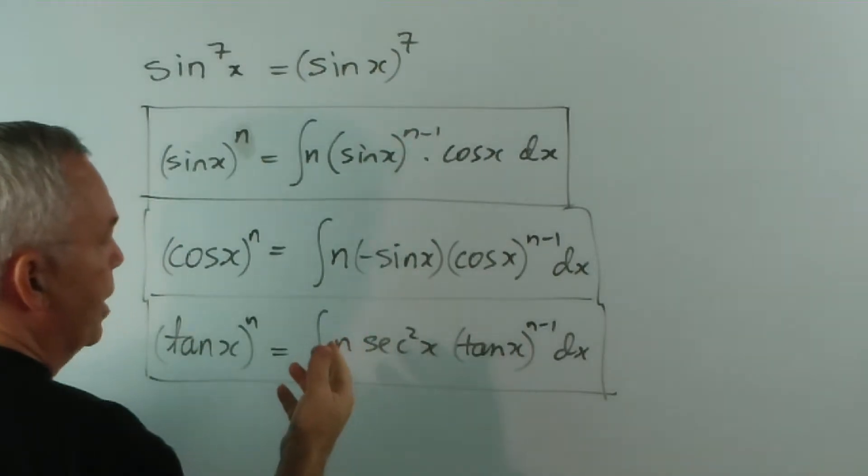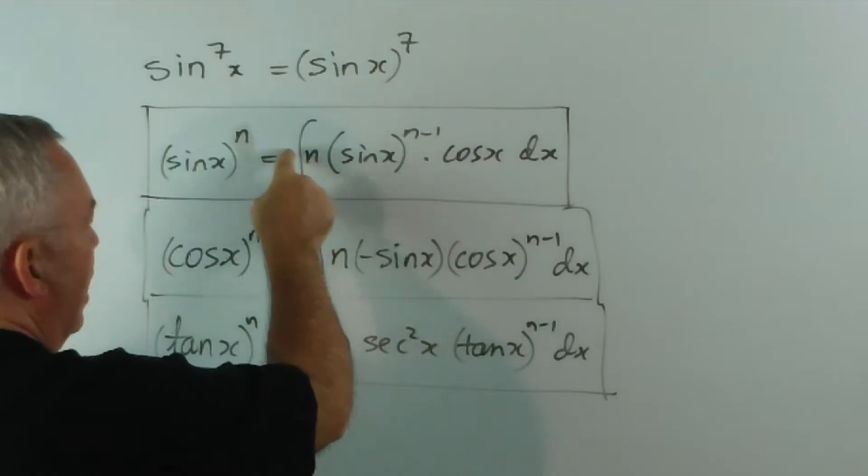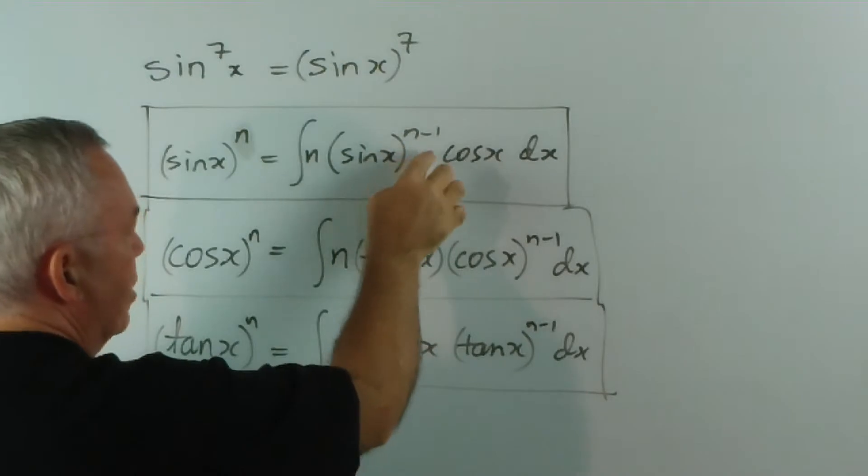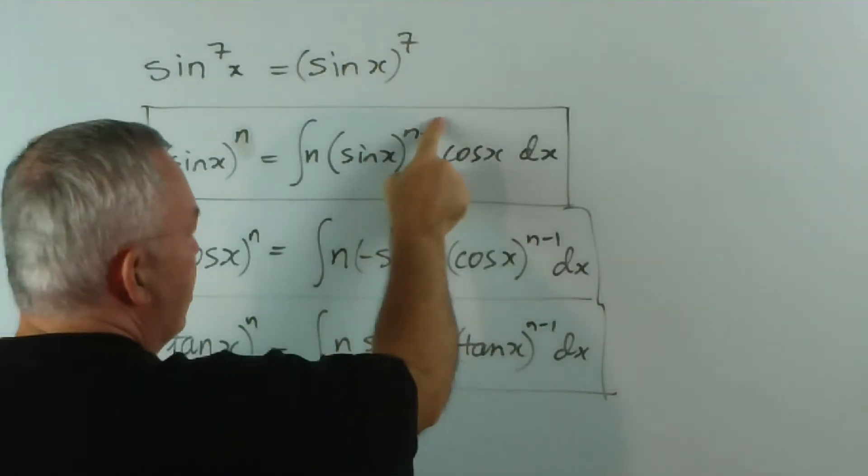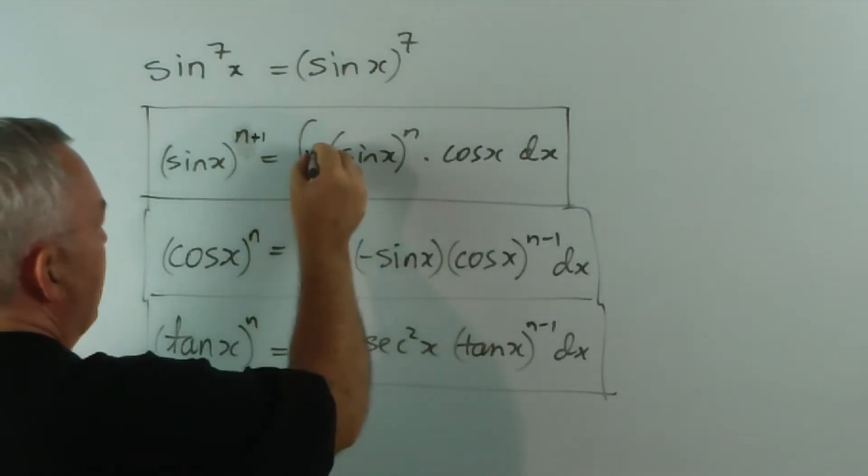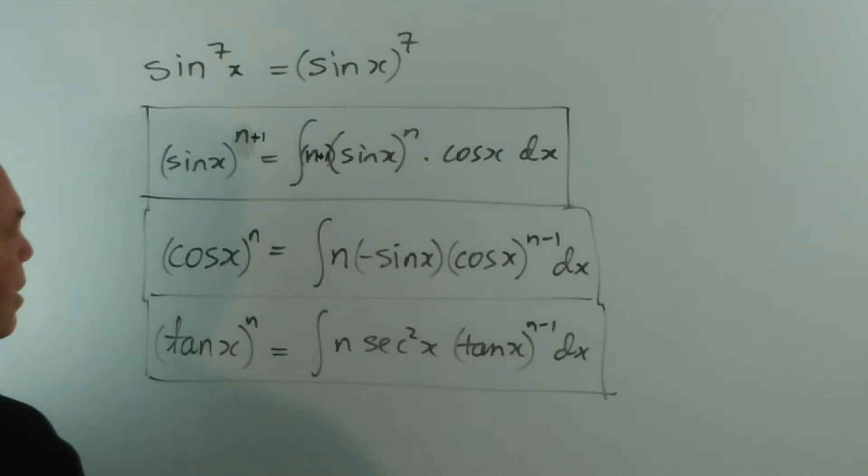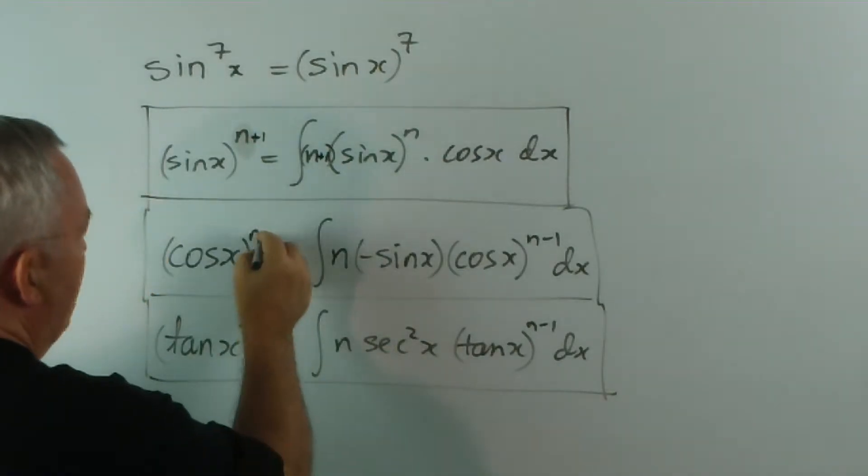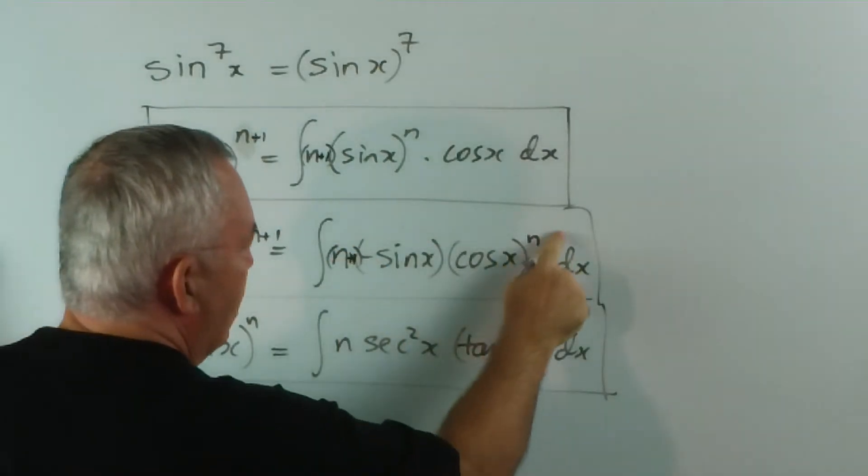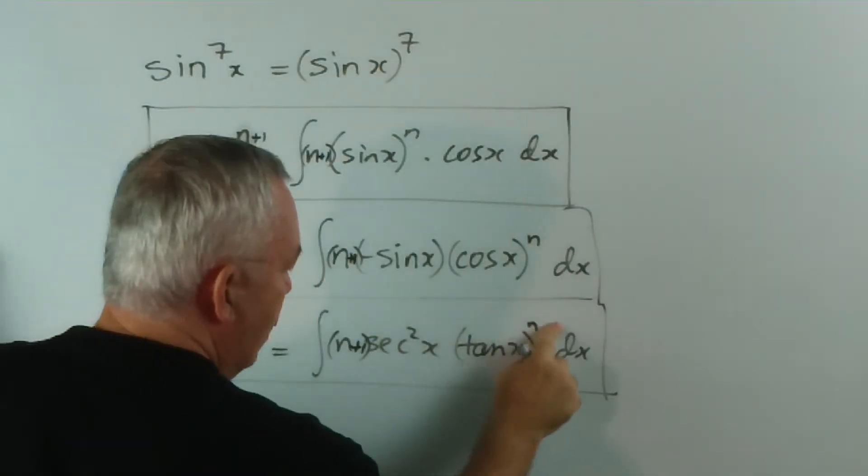So as not to confuse it unduly, I'm going to add 1 to each of the n's, because when we think of this pattern we're thinking of sine x to the n. So if I add 1 to this I get n plus 1. And if I add 1 to this I get plus 1. Add 1 here, add 1 here, add 1 there.